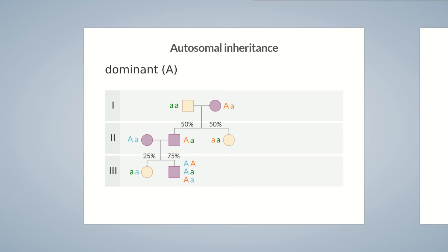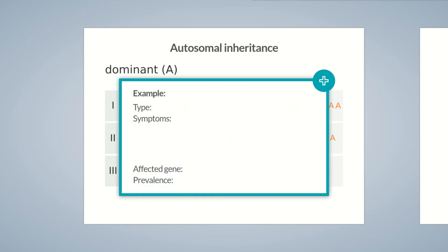But if an affected parent is homozygous for the dominant big-a, big-a genotype, then all offspring will carry the gene and express the phenotype.